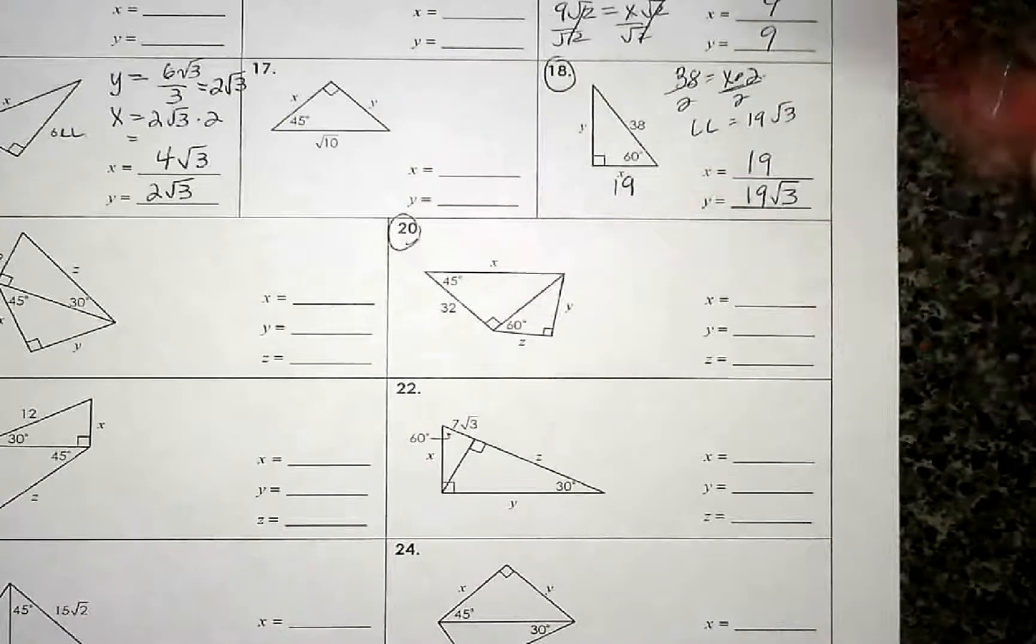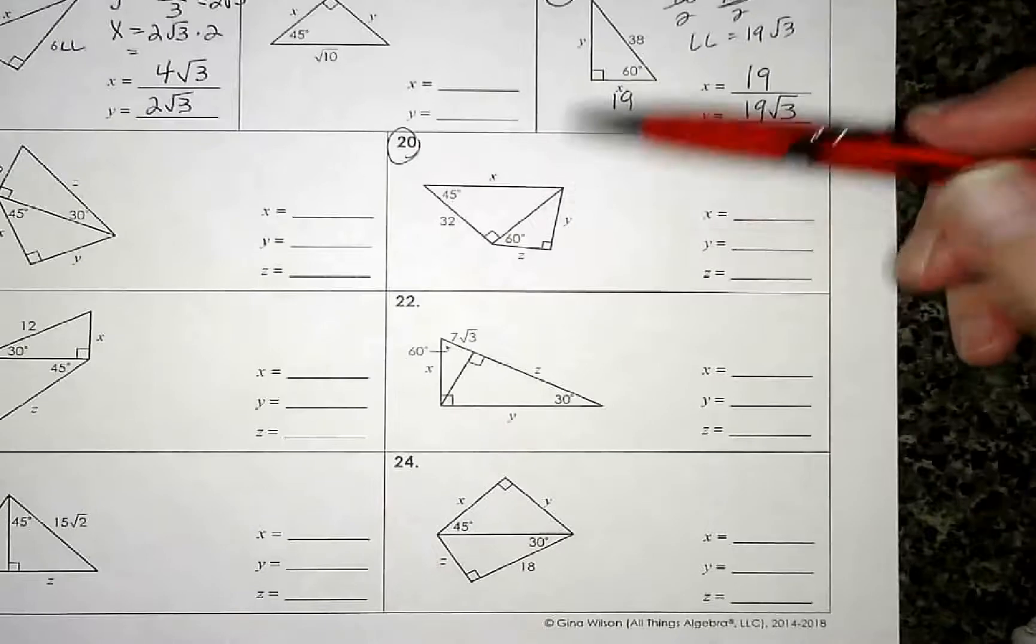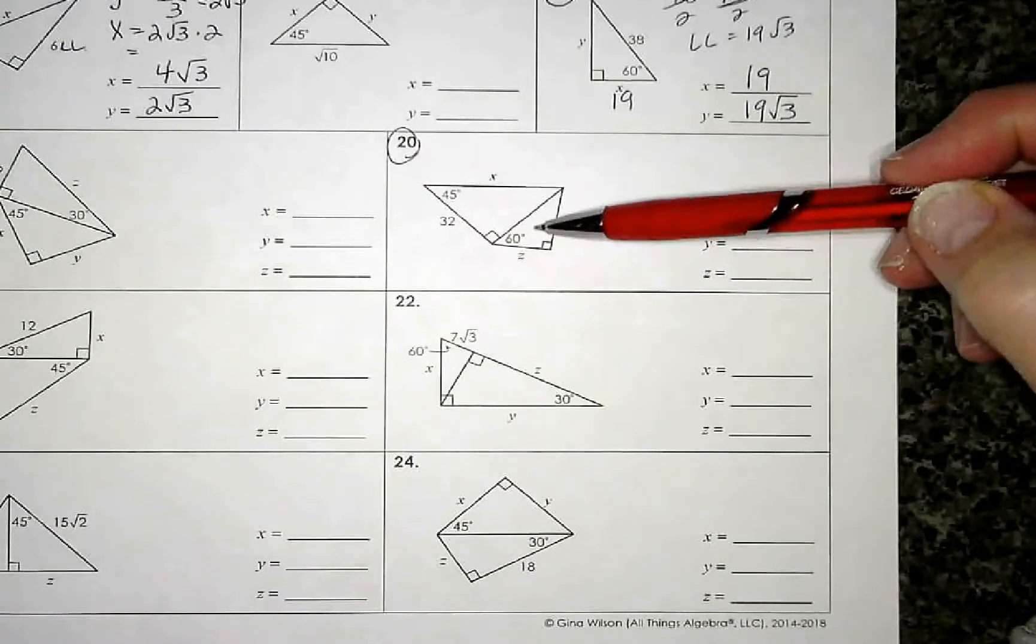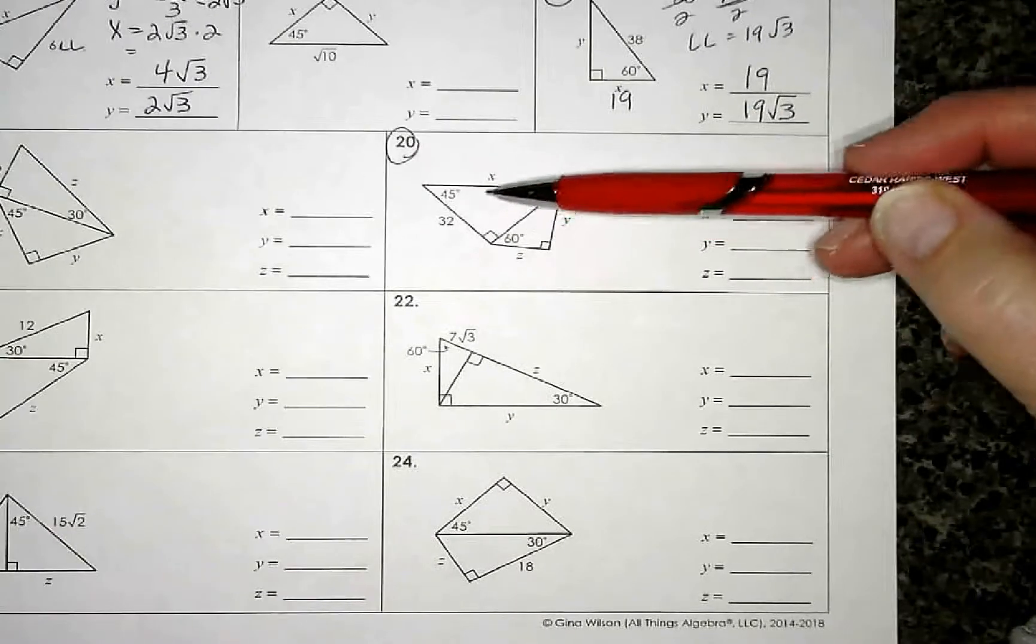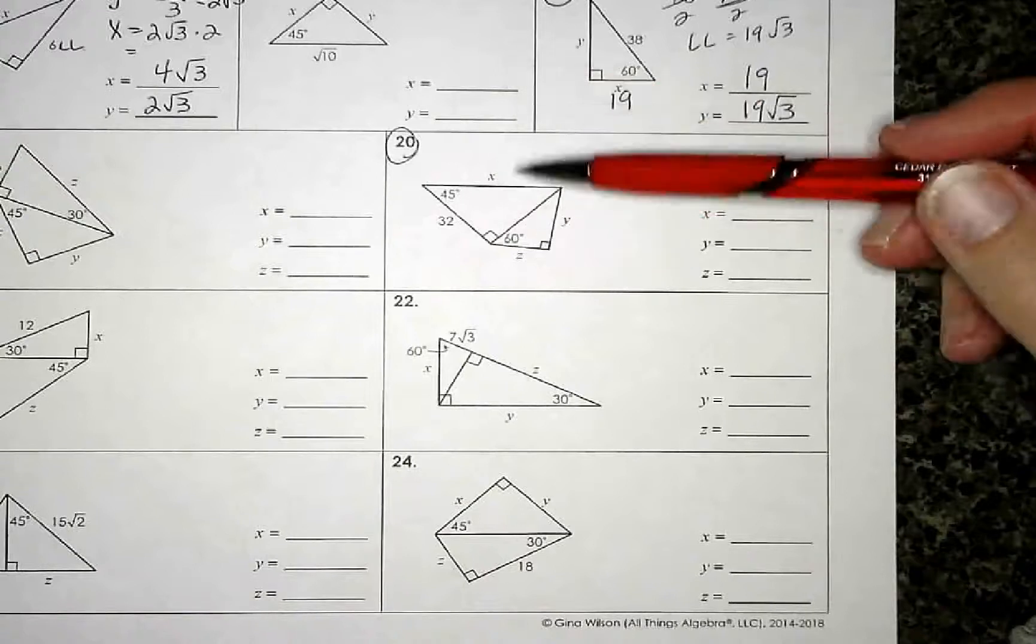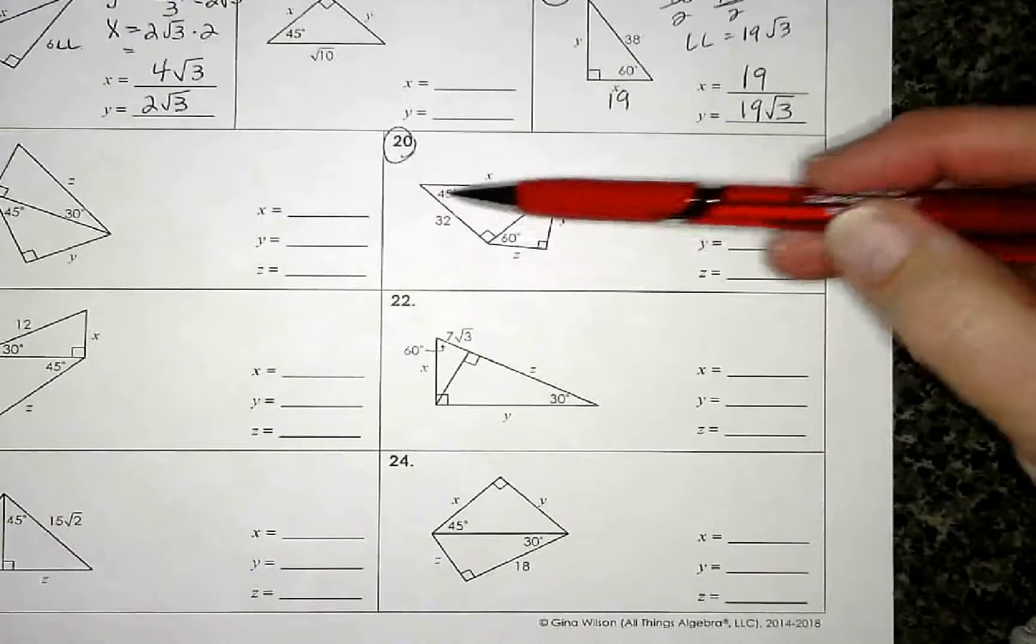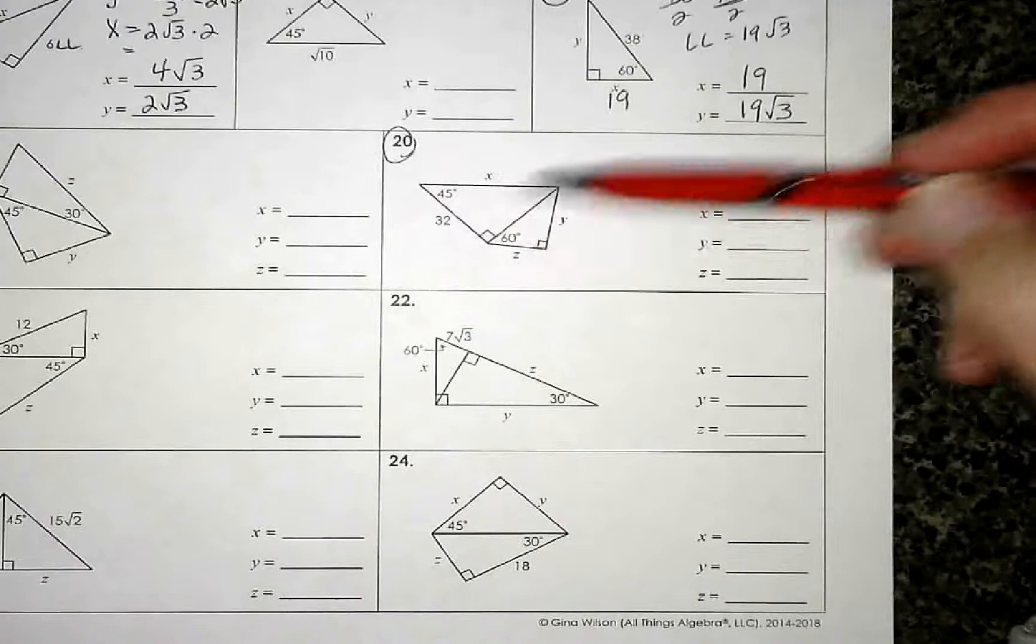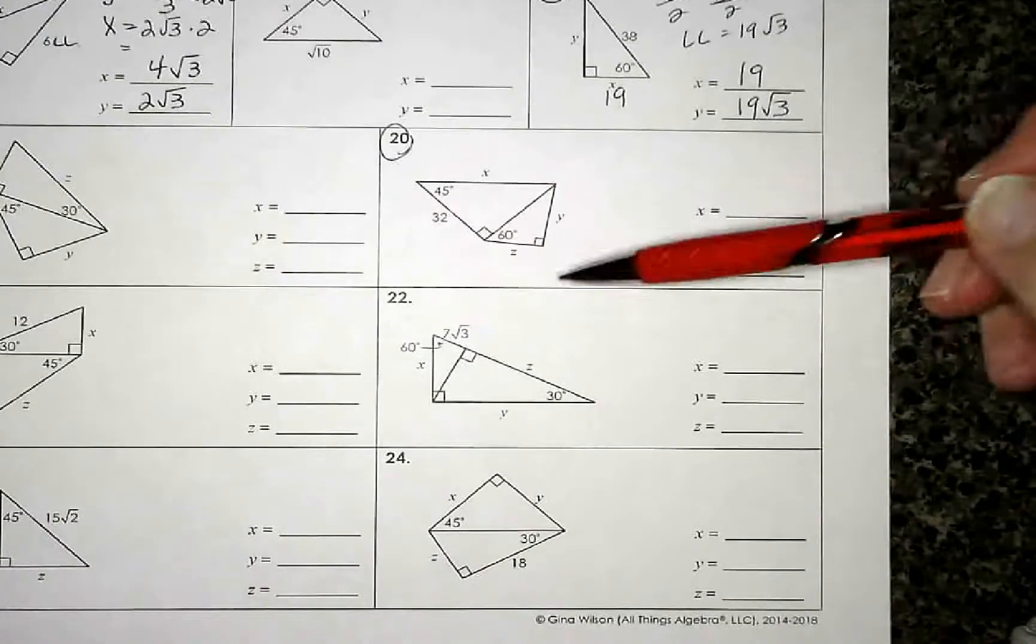So when I'm looking at number 20 or any of these down here at the bottom where there's more than one triangle, I'm looking at the two different triangles and I can see I want to find X, Y, and Z. How do I know which one to start with? Do I start with this triangle here or do I start with this one on the right side?